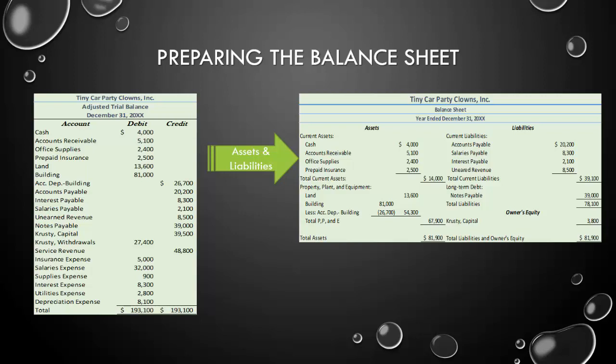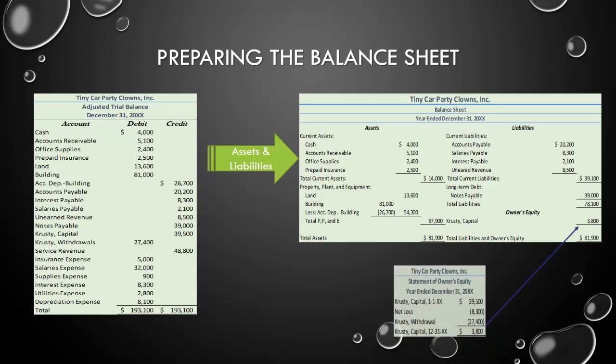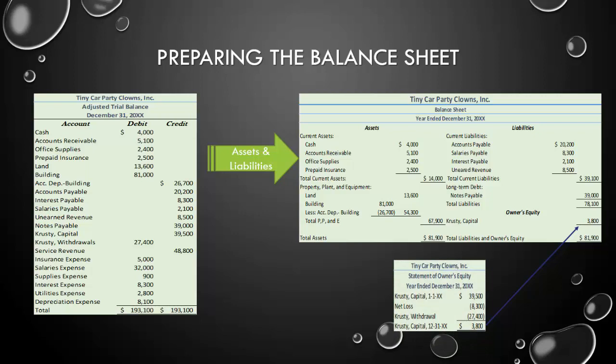Lastly, we need the capital balance under owner's equity, but we don't use the capital balance listed on the adjusted trial balance. Instead, we take the ending balance from our statement of owner's equity. Mr. Krusty's capital has decreased to $3,800 — that is the number we report on the balance sheet. When we add together liabilities and owner's equity, we get $81,900, the same as total assets. Our balance sheet does, in fact, balance.